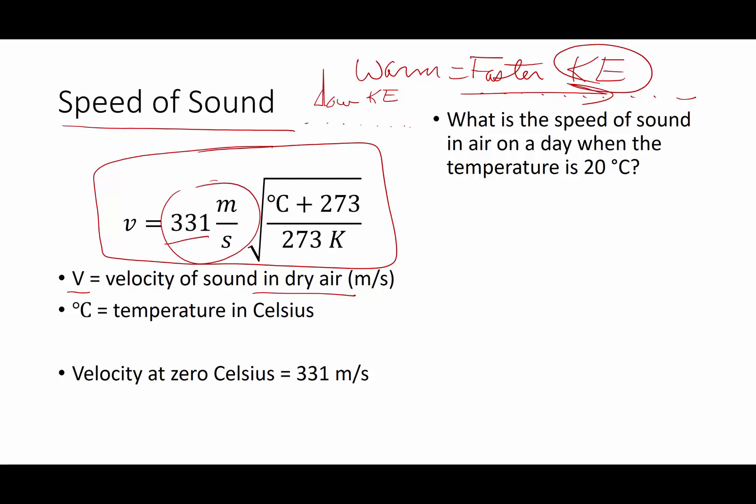We're going to stick to 331, but if you became an acoustic scientist, of course you're going to have to adjust that for humidity. Degrees Celsius is the temperature on that particular day. And what does that 331 represent? That's going to represent the velocity at zero degrees Celsius. So the velocity of sound in dry air at zero degrees Celsius is 331 meters per second.